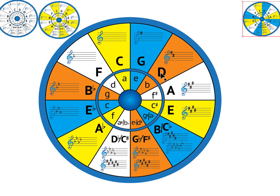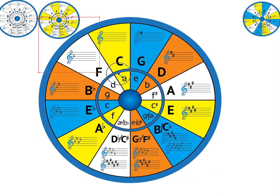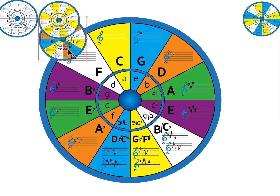Then we have G, B, and E flat; D, F sharp, B flat; and A, C sharp, and F. Please excuse the lack of enharmonic spellings — I'm not using every example, just displaying how they are symmetrical.